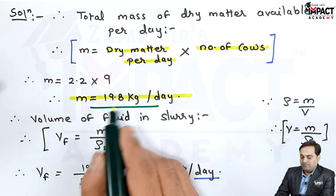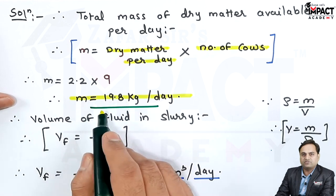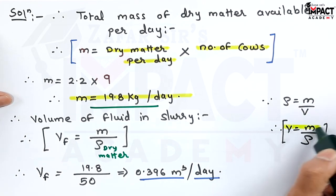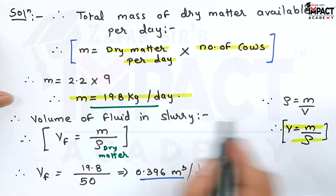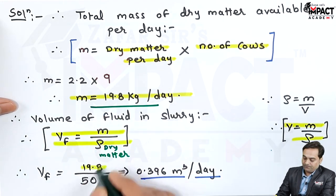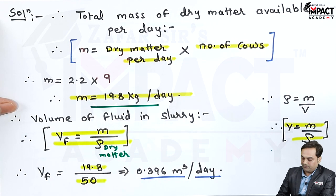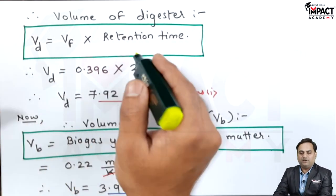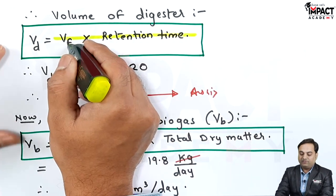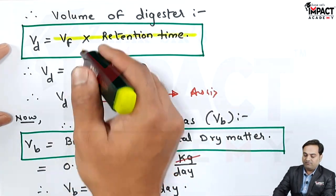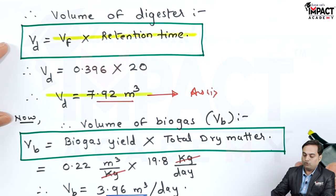After getting the mass, I will calculate the volume of this fluid because ultimately it will be mixed with water. Since density equals mass upon volume, volume becomes mass upon density. The volume of fluid in the slurry is mass upon density of dry matter: 19.8 divided by 50 kg per meter cube, giving a volume of 0.396 meter cube per day. Next, multiply Vf with the retention time — meter cube per day times days — the days cancel out and we get the volume of the digester in meter cube.